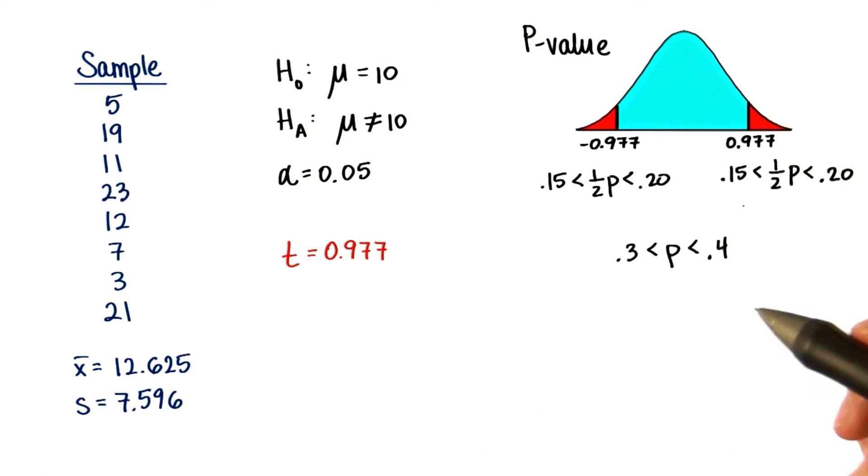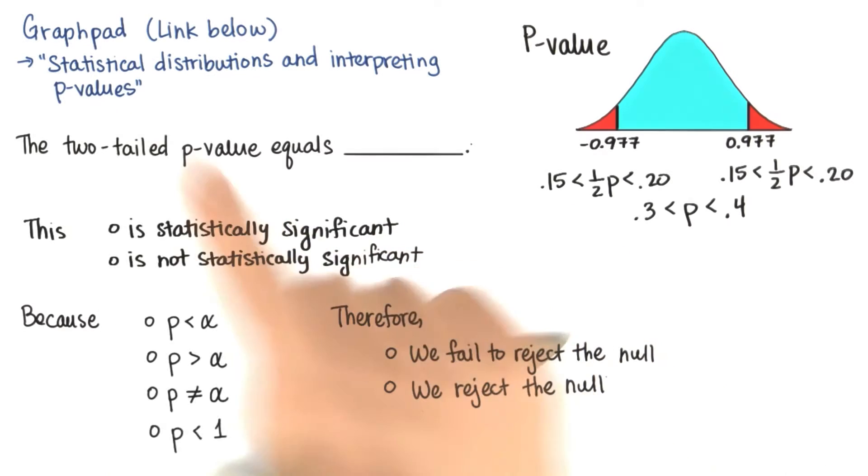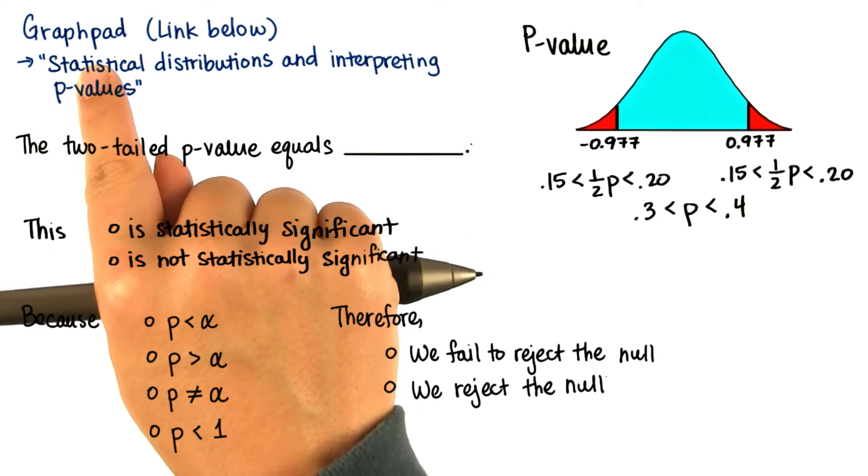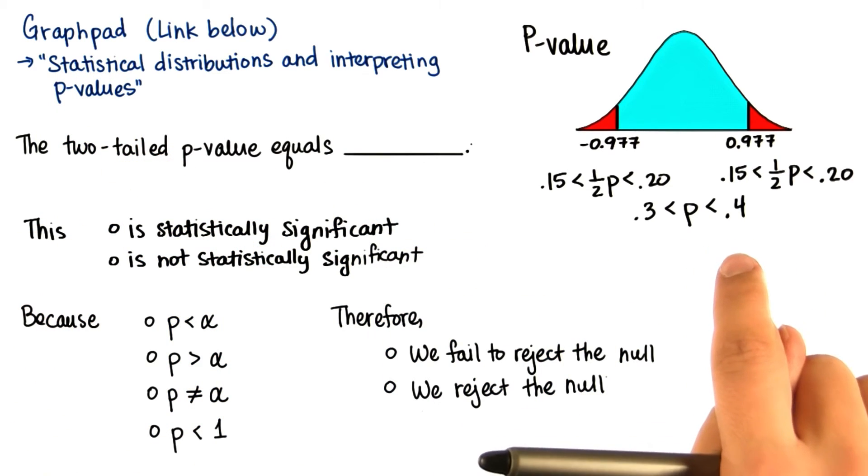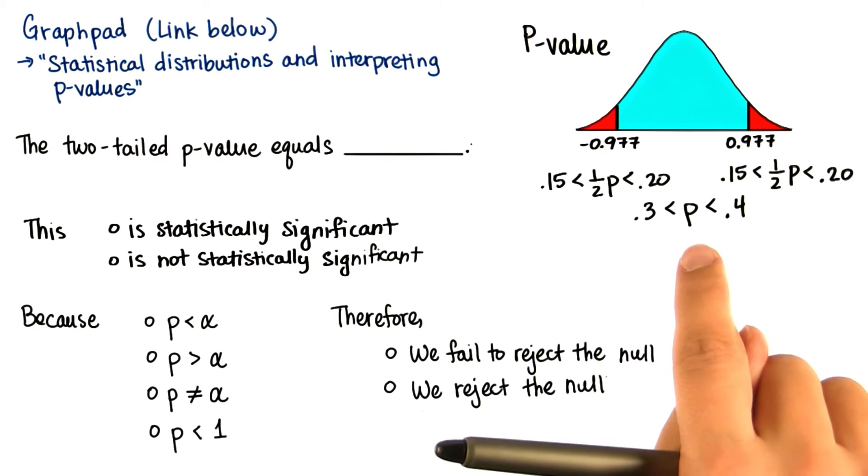But we don't need to be able to do it by hand or with a table, because these days we can use software. There's a website called GraphPad, the link is below, and use that to calculate what this p-value is, and you should find that it's between 0.3 and 0.4.